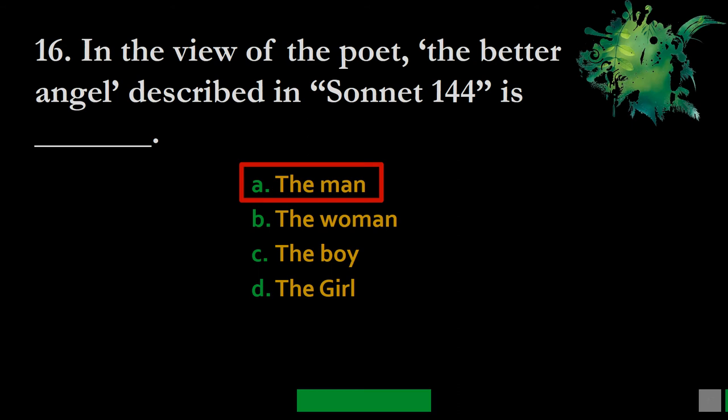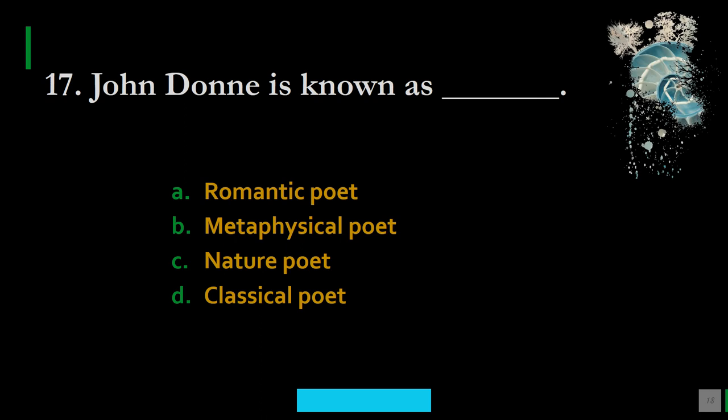Question 17: John Donne is known as — A. Romantic poet, B. Metaphysical poet, C. Nature poet, D. Classical poet. The correct option is B — John Donne is a metaphysical poet.